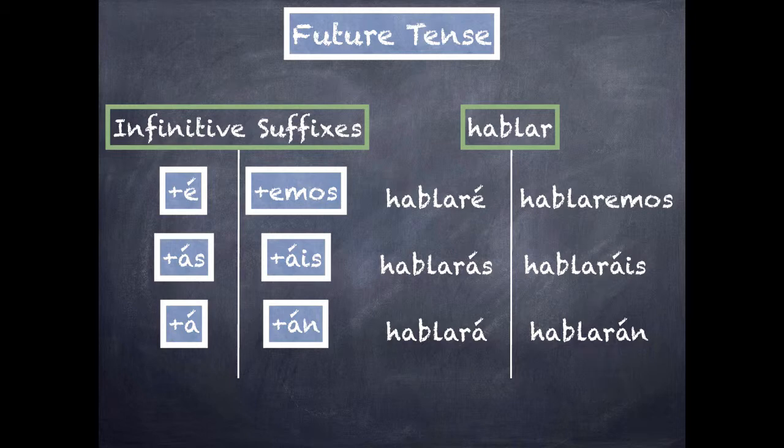And always make sure that both when you write it and when you say it, you're putting that emphasis on the syllable after the infinitive verb. Otherwise, these will overlap with other tenses and they'll be difficult to understand. So always make sure that emphasis goes right at the end there of that longer word. So that's it for the future tense conjugations.